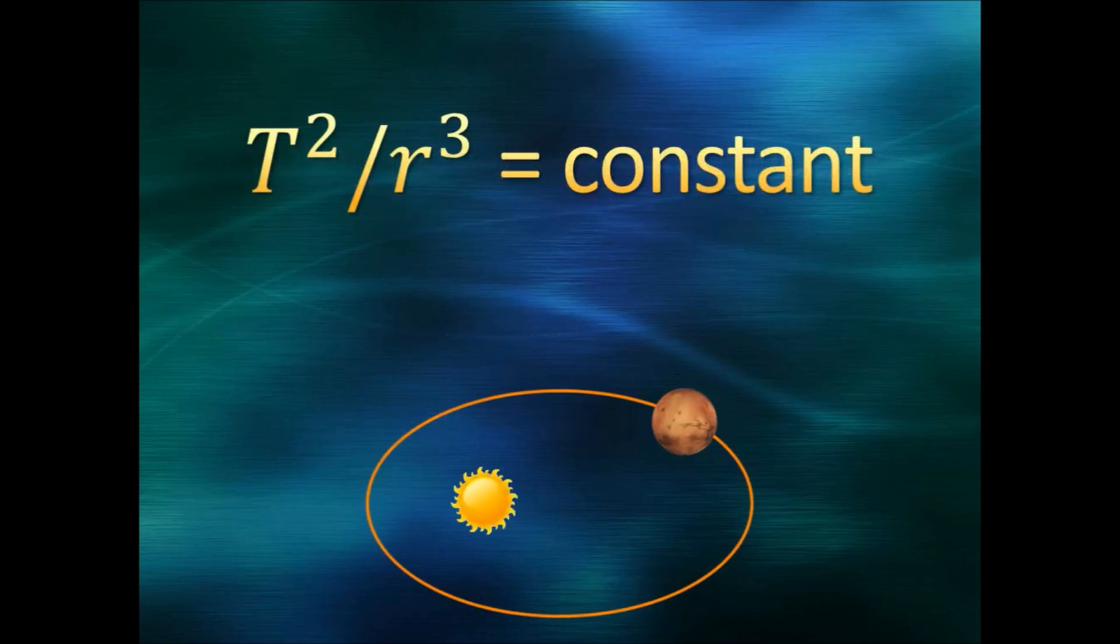Kepler's third law says that the two quantities are proportional. In other words, if you take T squared and divide it by r cubed, you get a number that does not change. It is a constant in the orbit of any planet. And I mean any planet.